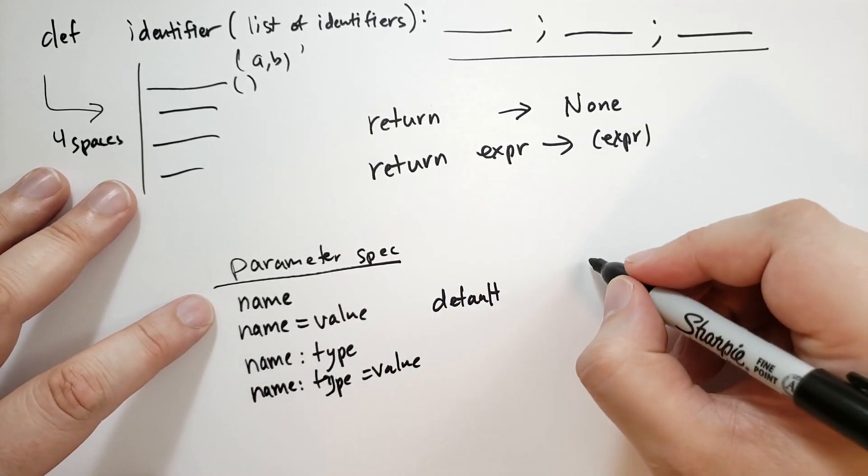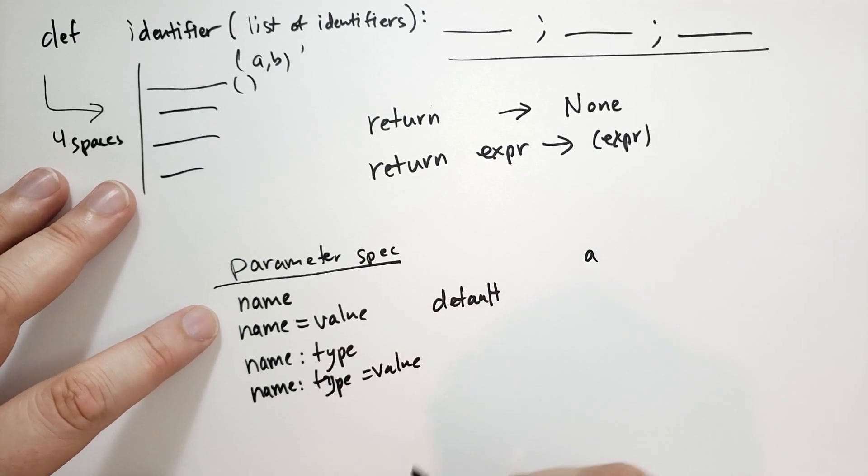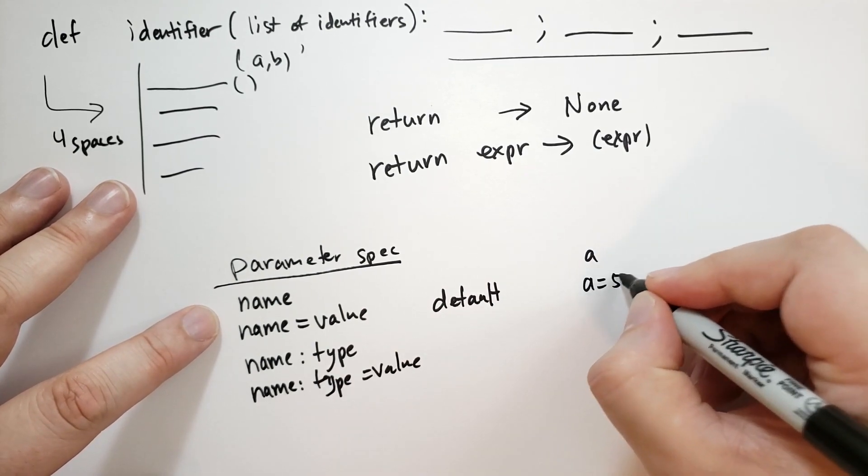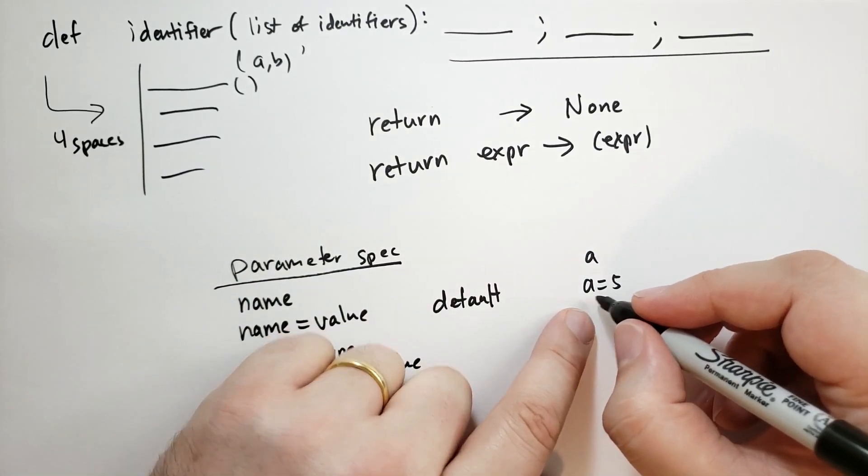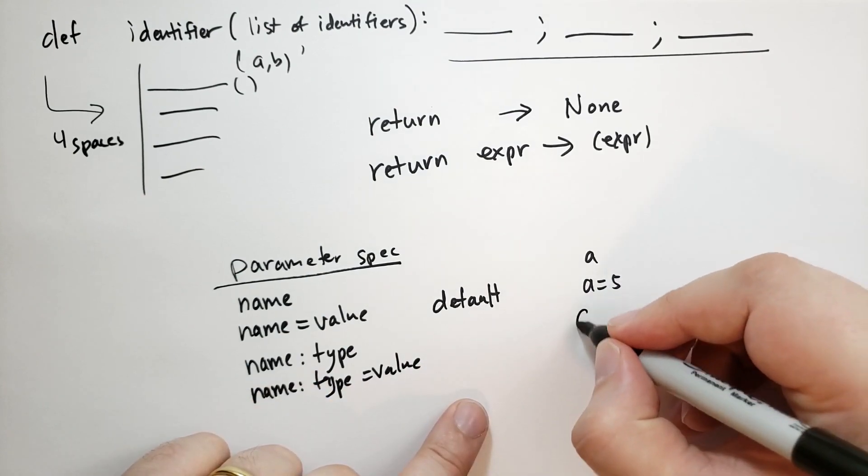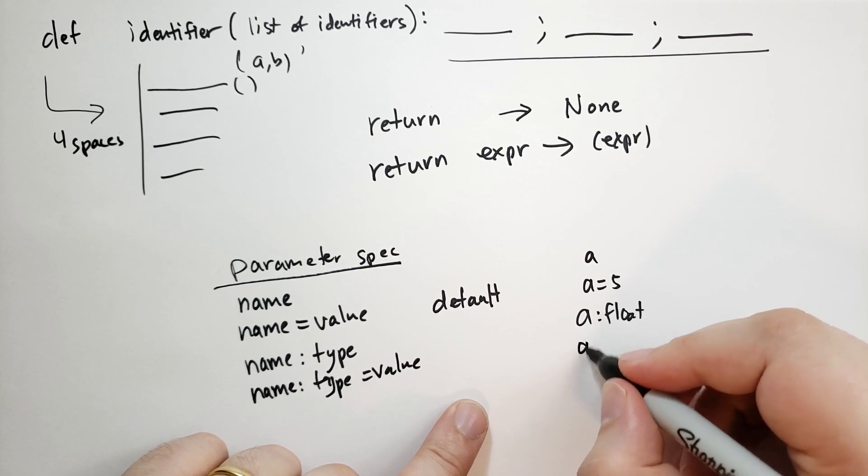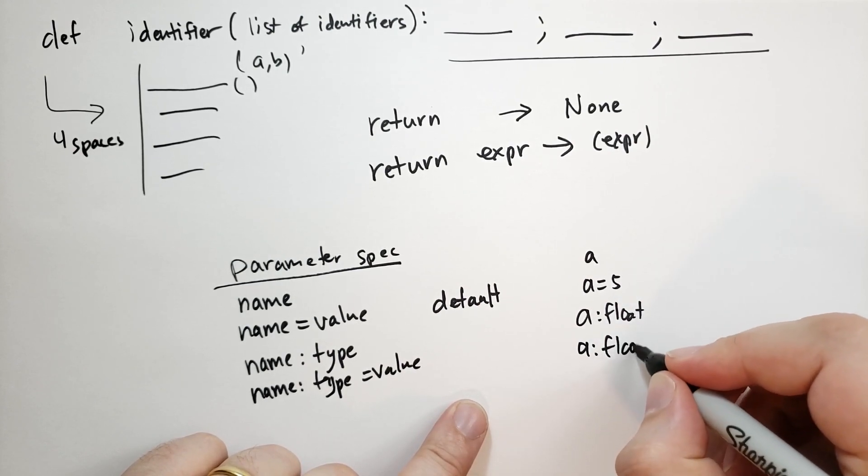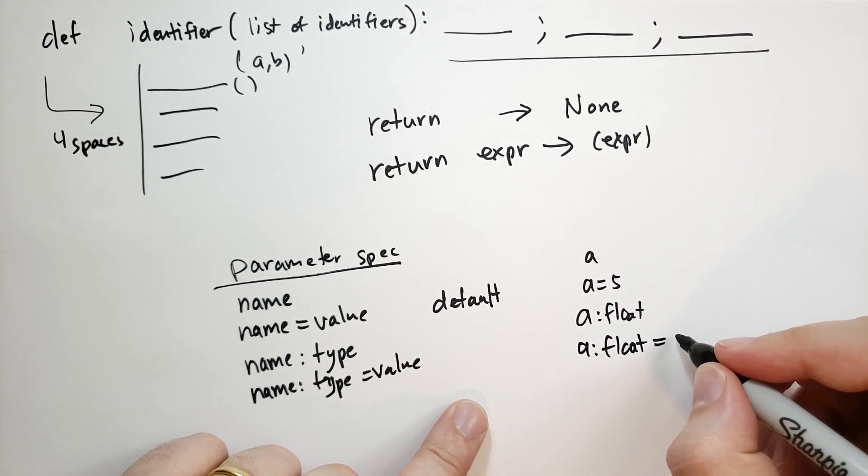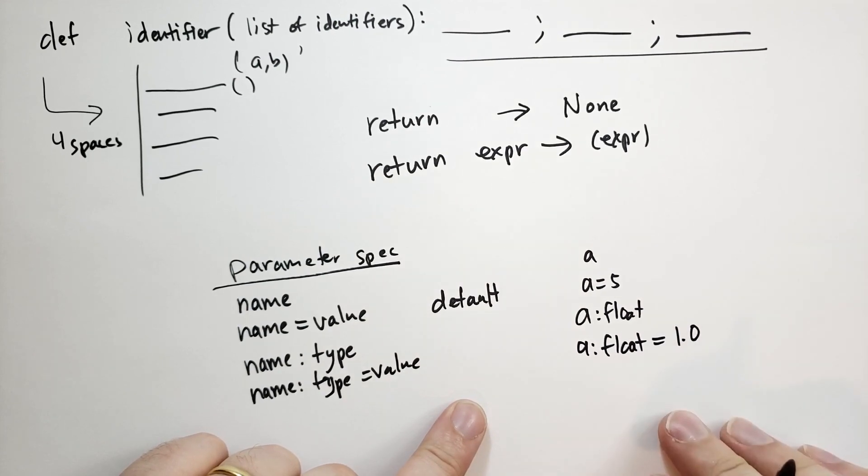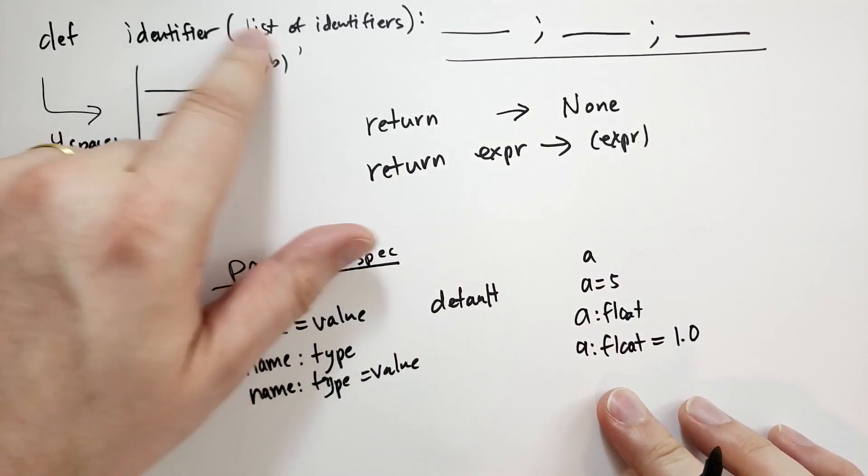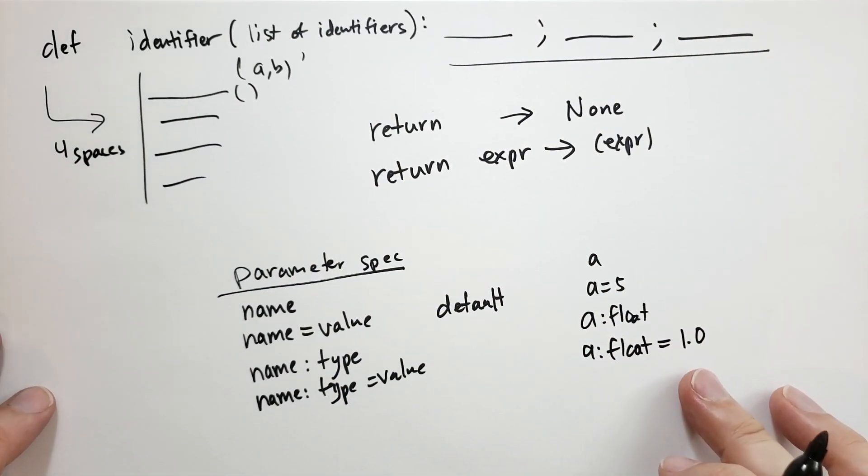Some examples. So you could just have the parameter a. You could say a is equal to 5. So if the user doesn't specify the a parameter, then it's set to 5. You could say a is a float. A is a float, or should be a float, and it's equal to 1.0 if it's not specified. Those are all valid parameters that could be in the list of parameters up here.